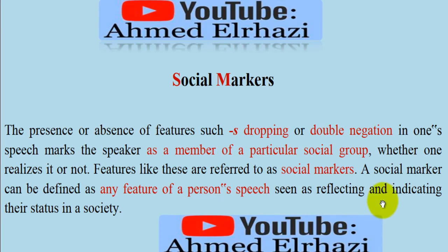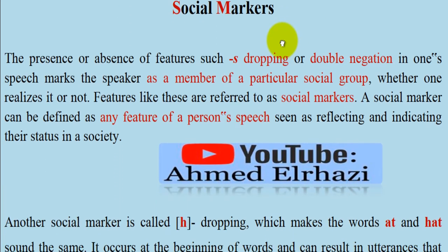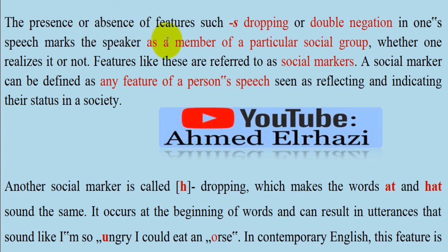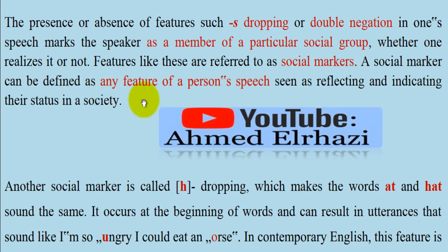The presence or absence of features such as S-dropping or double negation in one's speech marks the speaker as a member of a particular social group, whether one realizes it or not. Features like these are referred to as social markers.